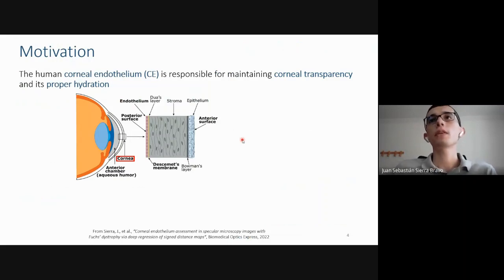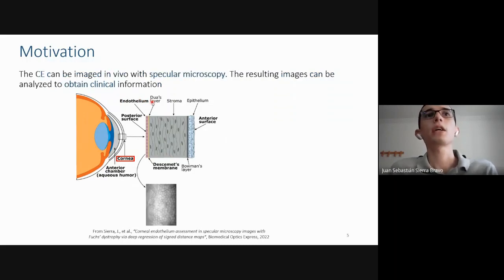The human cornea endothelium is responsible for maintaining the cornea transparency and its proper hydration, both critical for good vision. The cornea is the first lens of the eye and it is composed of six layers, being the endothelium the innermost layer. The cornea endothelium can be imaged in vivo with specular microscopy. The resulting images can be analyzed to obtain clinical information by quantifying the cells and their morphometry. Here is an example of one specular microscopy image where each hexagon are cells.